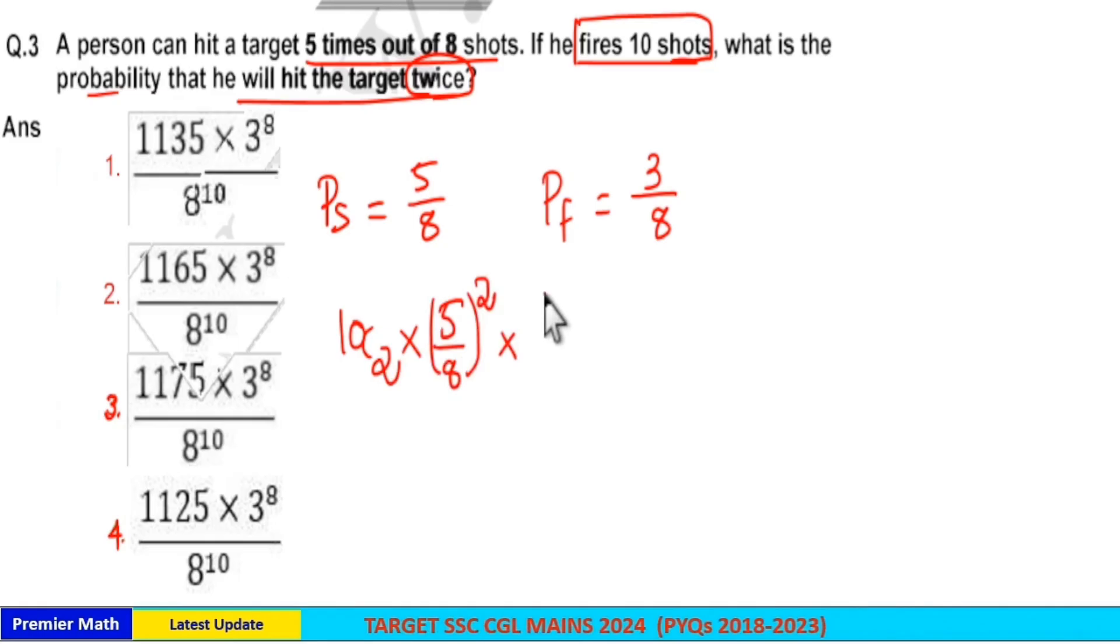And here when you hit the target, probability of failure is 3 by 8. But out of this 10, 2 times you hit the target. So remaining 8 times, you fail. So probability of failure is equal to 3 by 8 raised to 8.